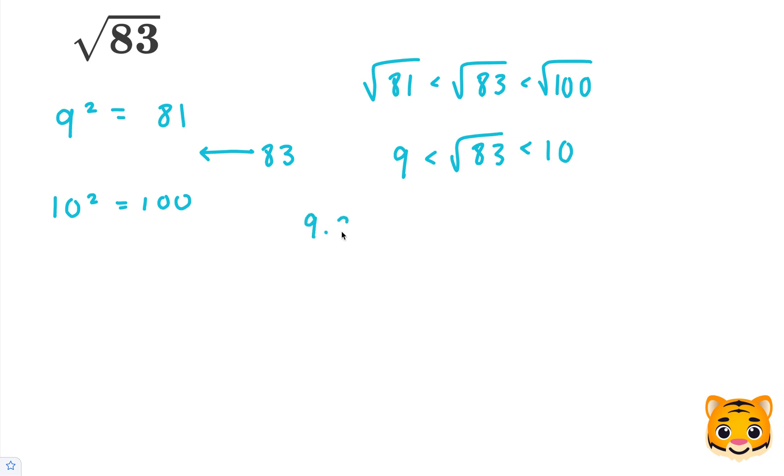So let's try 9.2. 9.2 times 9.2 will give us 9.2 squared. Let's multiply this. 2 times 2 is 4. 9 times 2 is 18. Add our 0. 9 times 2 is 18. Add the 1. 9 times 9 is 81. Plus 1 is 82. When we add these together, we get 84.64.